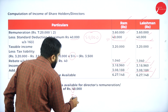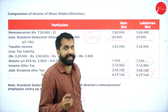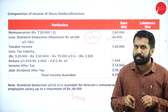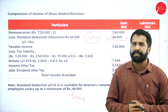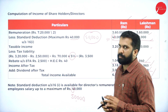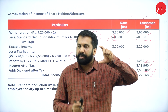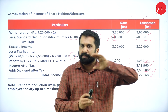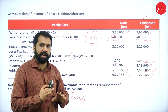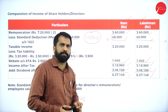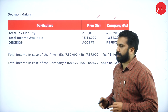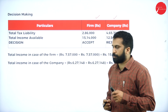Standard deduction is now 50,000 — revised this year. The procedure for firm versus company comparison: calculate total income of firm and individual income of partners; then calculate total income of company and individual income of directors. Then compare the total tax liabilities.